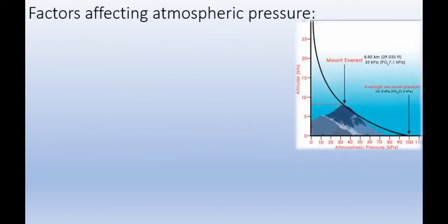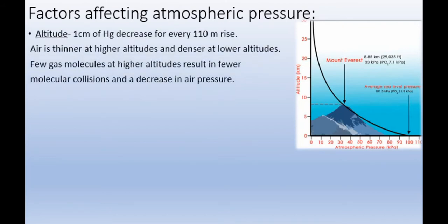Now we can discuss about the factors affecting atmospheric pressure. As you all know, the movement of air always goes from high pressure area to low pressure area. According to altitude and latitude, pressure will change. The first factor is altitude — pressure decreases for every 110 meter rise in altitude.